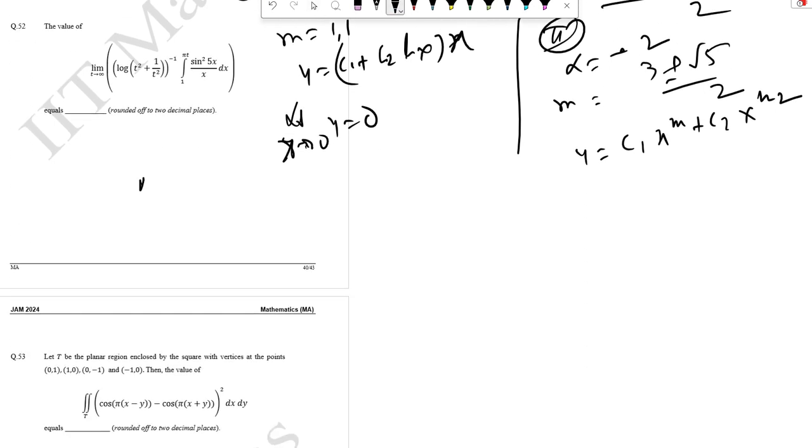Case 3: alpha equal to minus 3. m equal to 4 plus minus 2 root 3 by 2. So in the limit, the value of y will be 0.